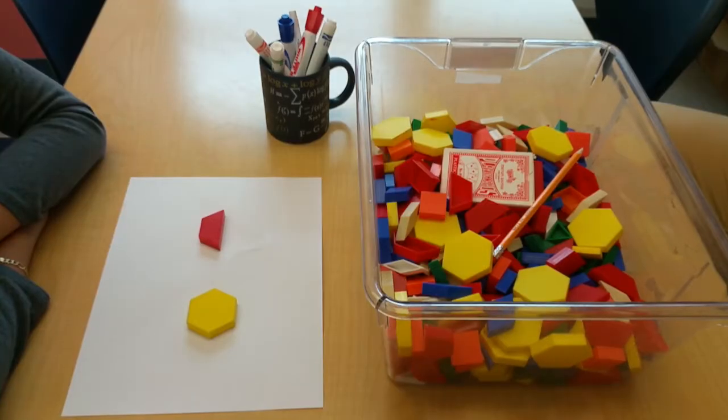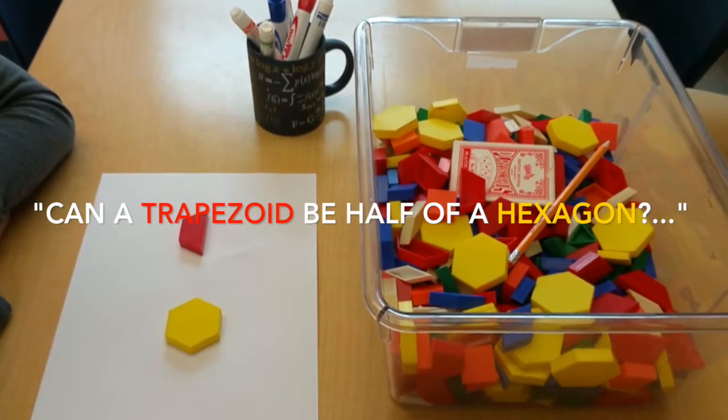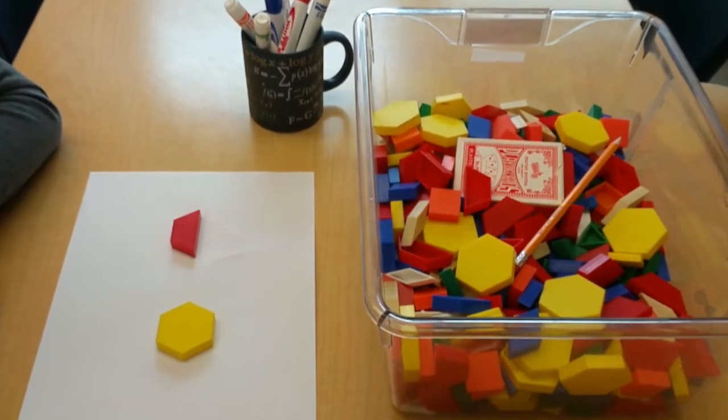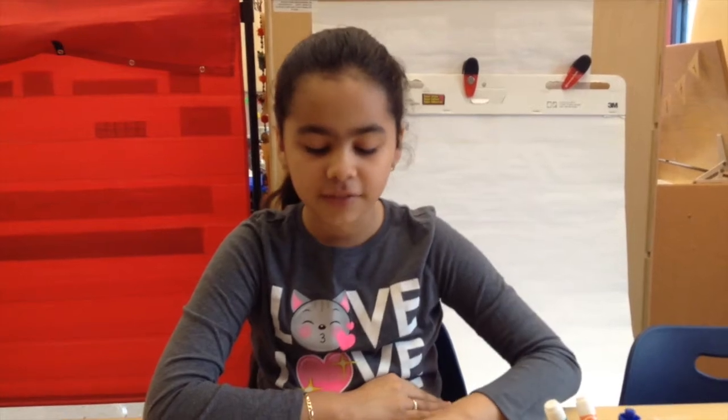I don't think that a trapezoid can be the half of a hexagon. I'm confused. My whole class said that a trapezoid is the half of a hexagon.